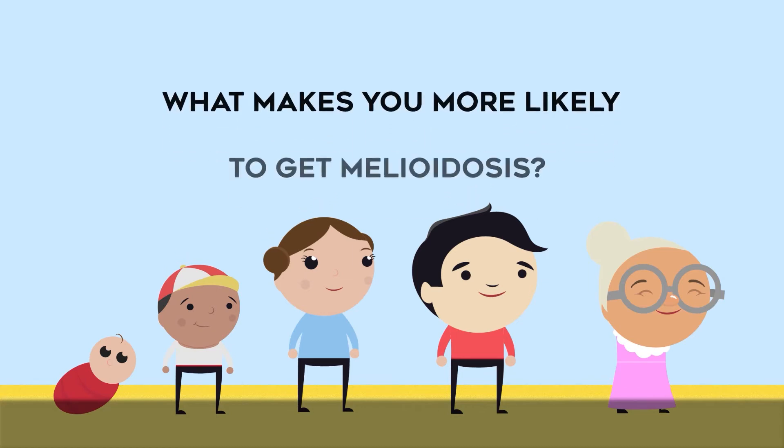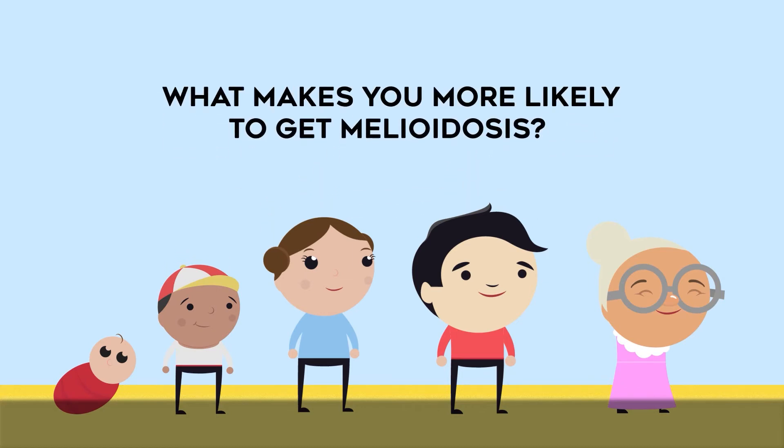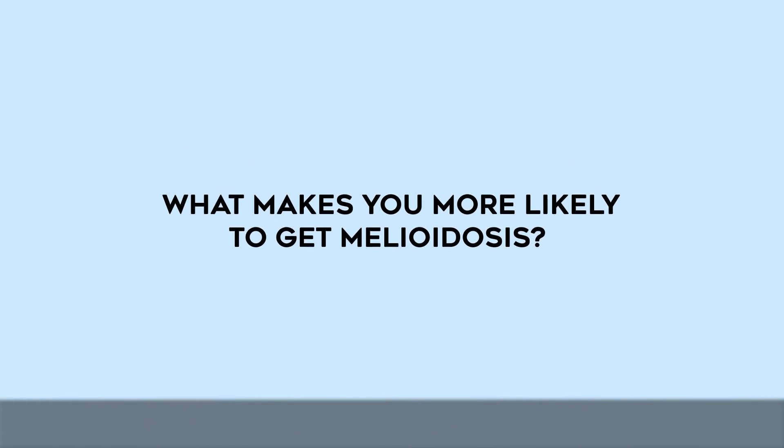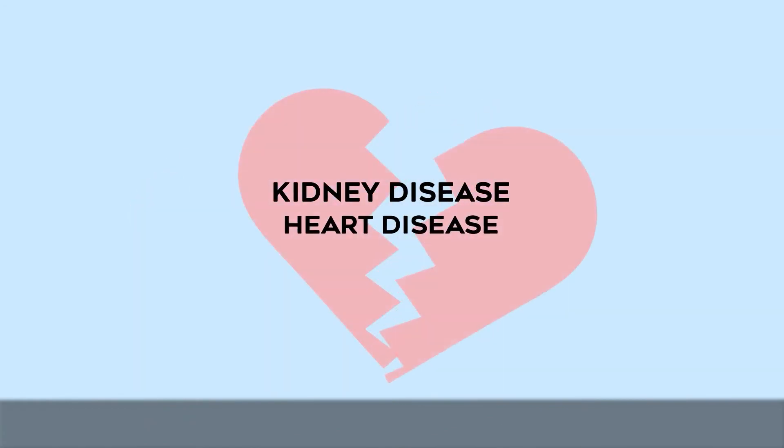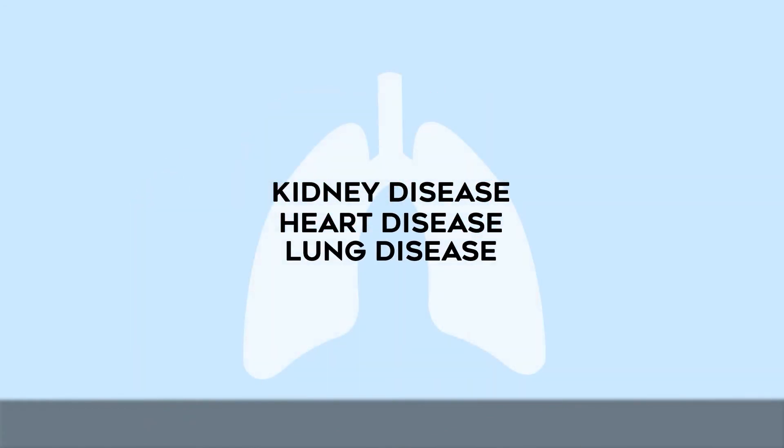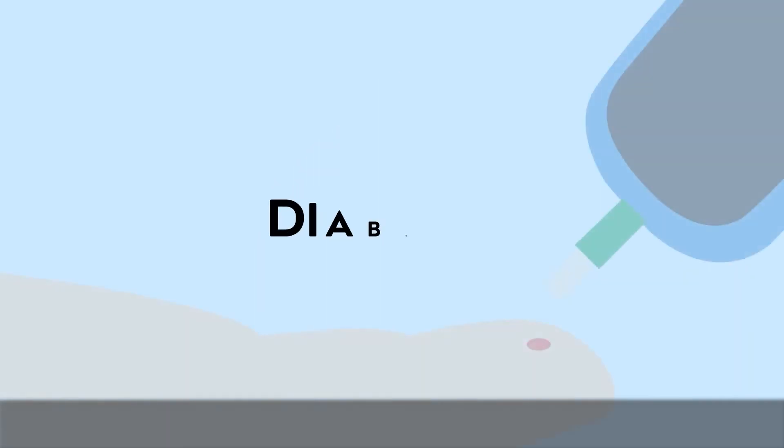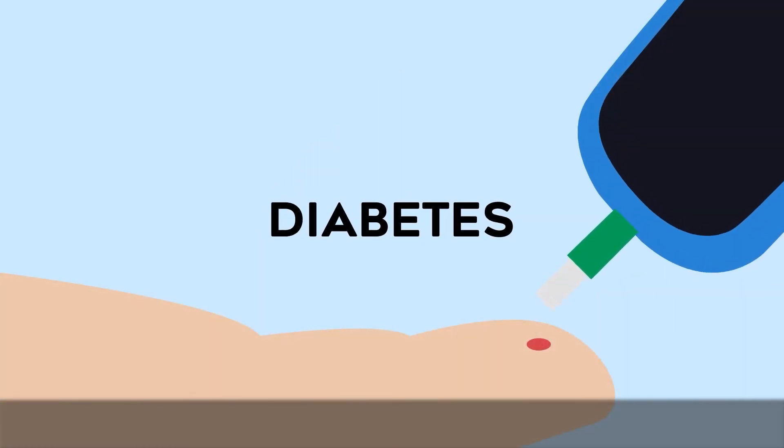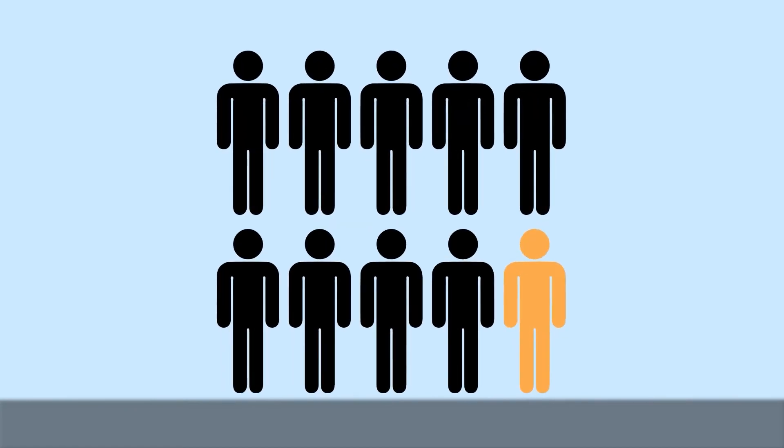So, what makes you more likely to get melioidosis? Well, any long-term diseases like kidney disease, heart disease, lung disease, and diabetes. Did you know that about 1 in 10 adults in the world have diabetes? And the people that get melioidosis the most are those with diabetes.